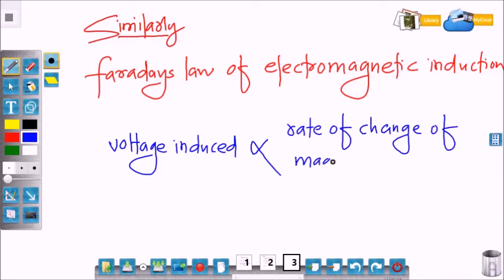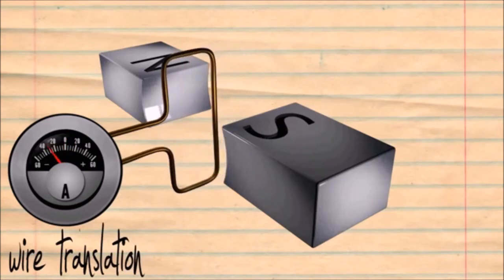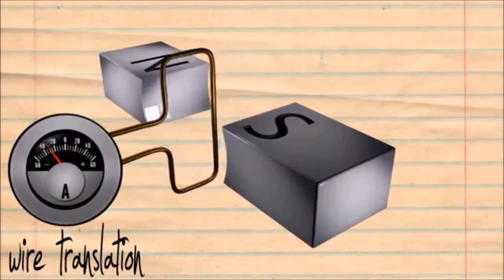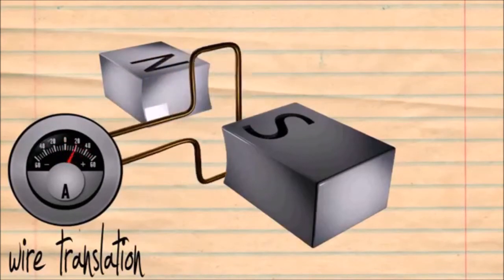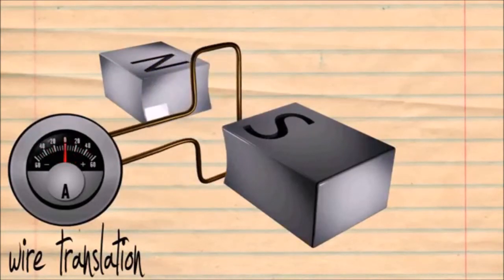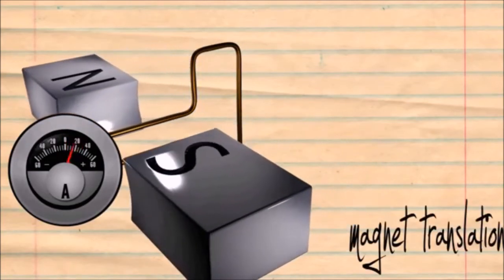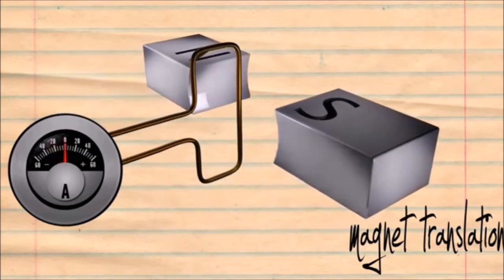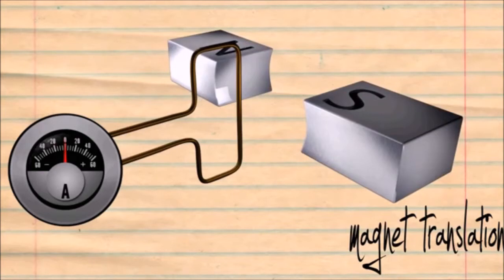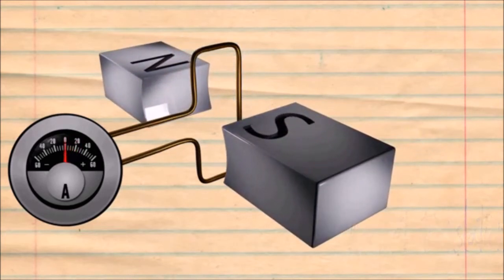There are two ways by which the magnetic flux can be changed. You can see in this animation how voltage gets induced into the coil. In the first case, the coil moves to and fro in a magnetic field — that's why there is a rate of change of magnetic flux, causing voltage to be induced in the coil, as shown on the voltmeter. Similarly, if the coils are fixed but the magnetic field moves to and fro due to motion of the magnet, there is a cutting action of magnetic flux, resulting in a rise in voltage.